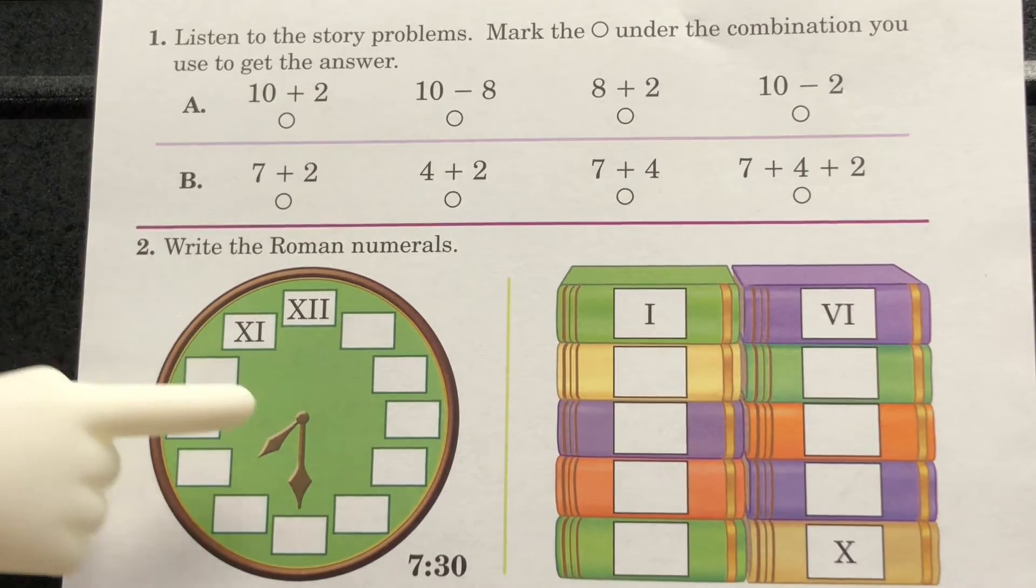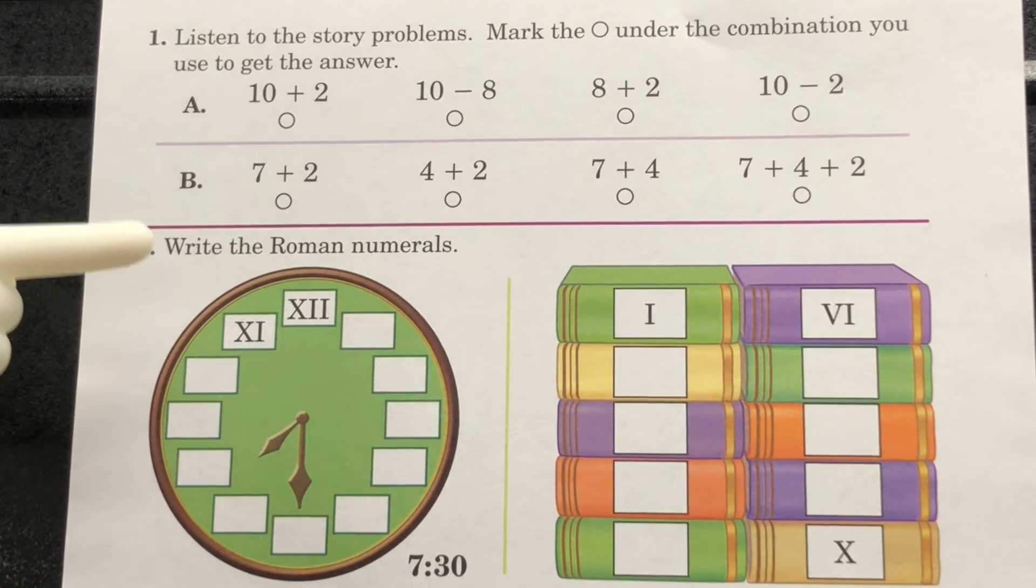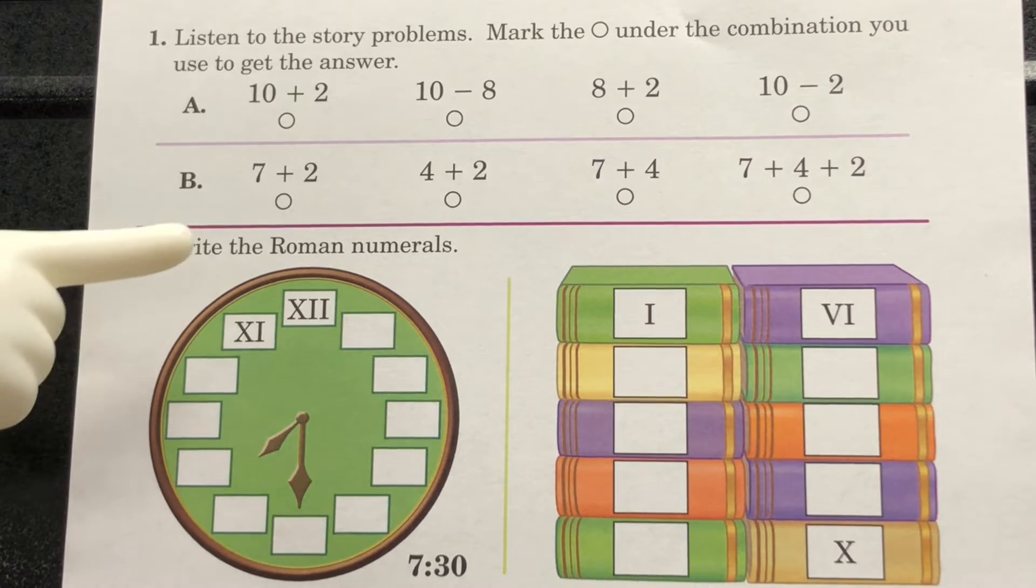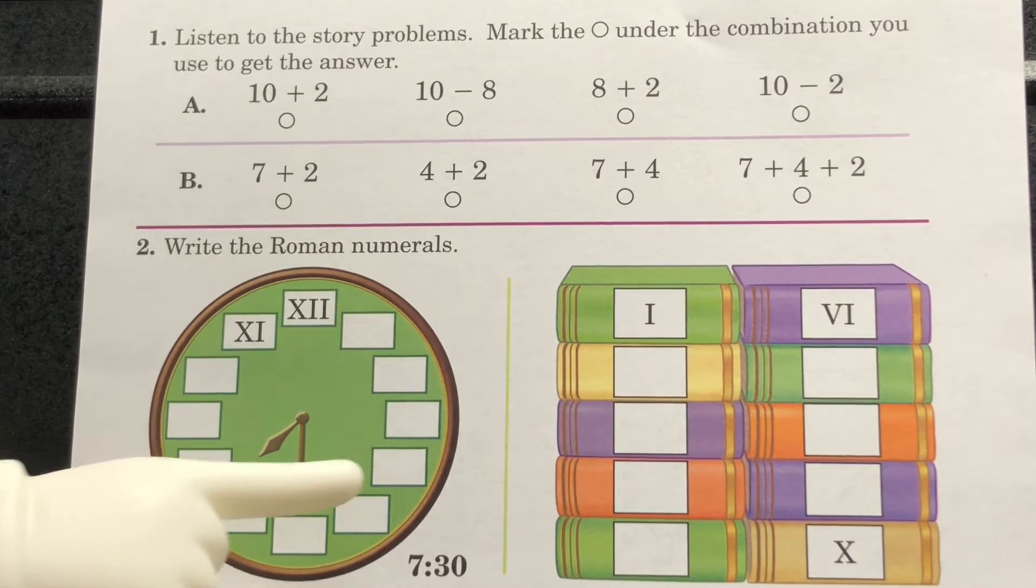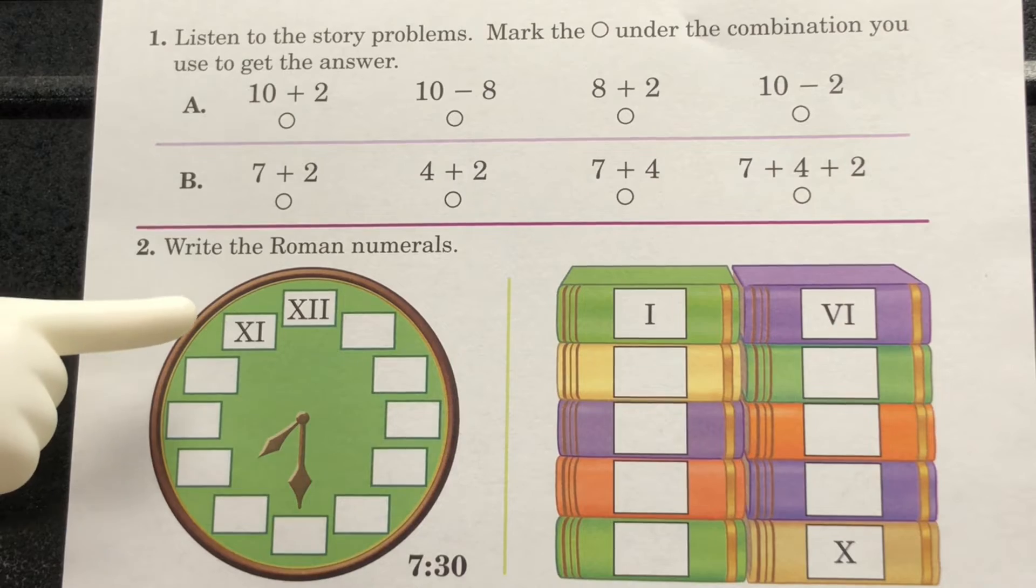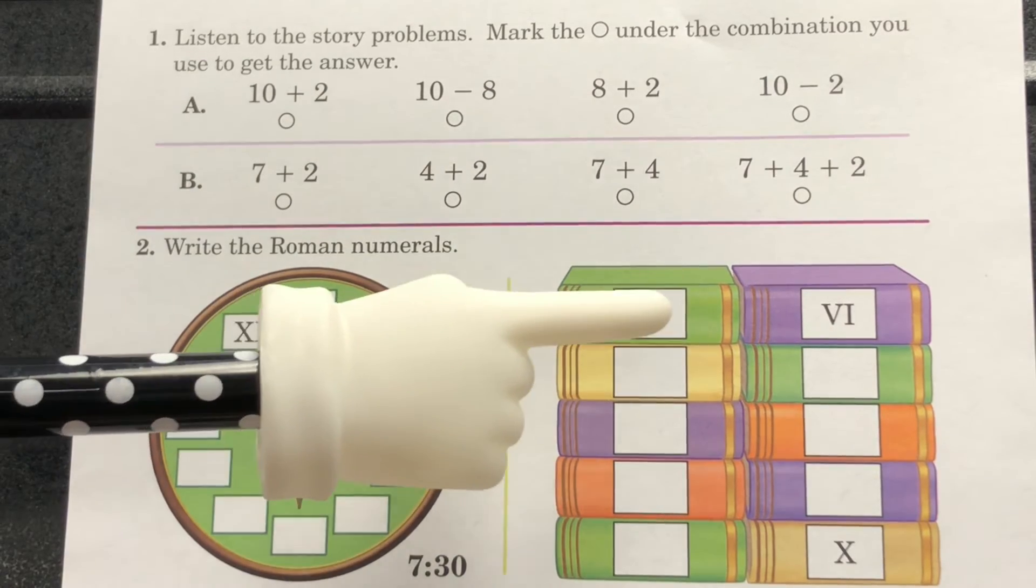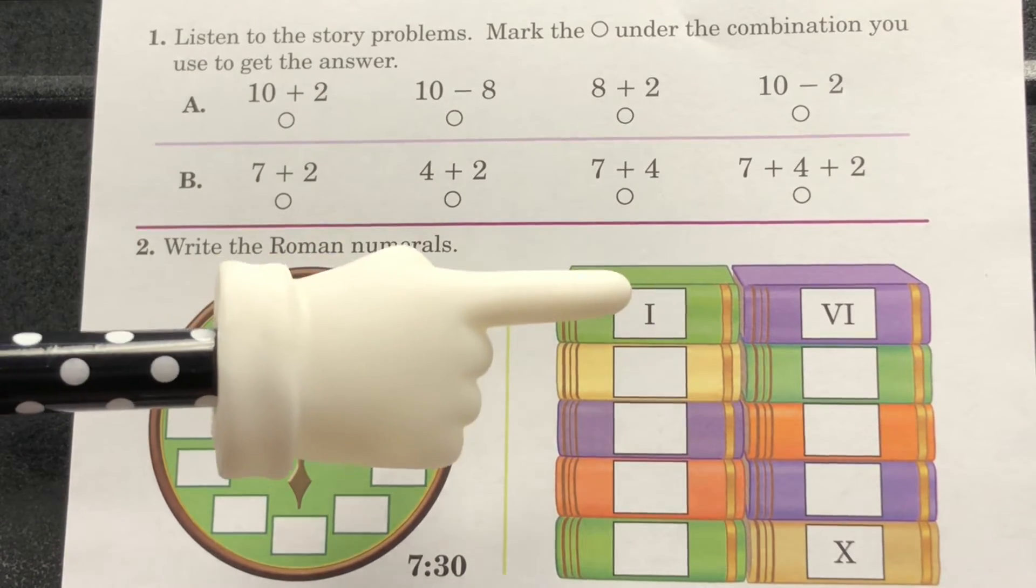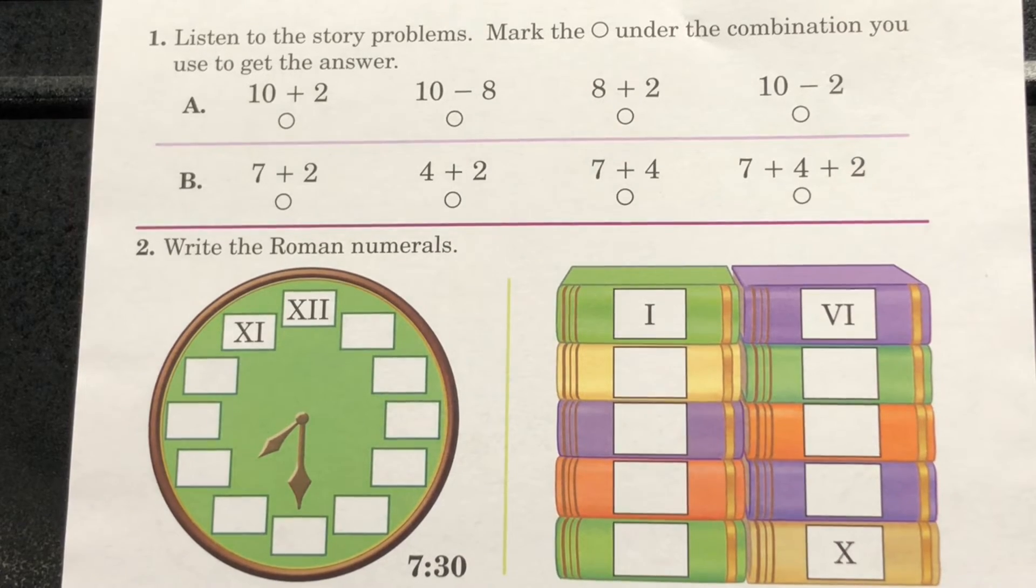Take a look at section 2. Write the Roman numerals. You're going to write the Roman numerals on the face of the clock, and then you're going to write the Roman numerals on a set of books. Complete section 2.